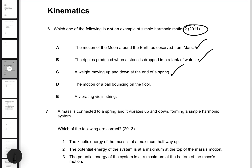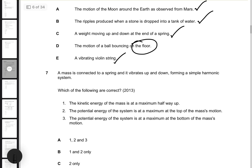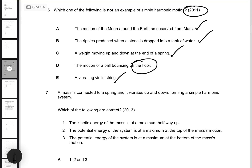The motion of a ball bouncing on the floor — we'll come back to this. Choice E is a vibrating violin string, and any musical instrument with a string involved with harmonics is considered simple harmonic motion. For choice D, the motion of a ball bouncing on the floor is not necessarily harmonic because the ball will eventually slow down, stop bouncing, and that's not periodic. So D is not an example of simple harmonic motion.